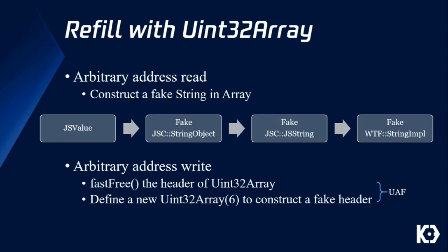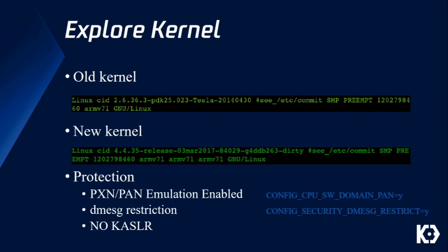Consider a situation where the buffer of a uint32 array overlaps with the array storage structure. We made a fake string in a JavaScript array by constructing a series of fake structures, including string object, JSString, and StringImpl. The length in StringImpl is big enough so we can read the whole memory through this fake string. After all of this, achieving arbitrary address write is not hard — just write the shellcode into the JIT memory. Now we have a shell on CID.